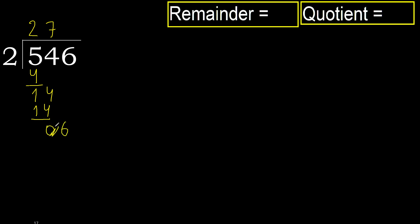Next. Eliminate 0. Here. Okay. 6. 2. Multiply by 3 is 6. Subtract: 6 minus 6 is 0.